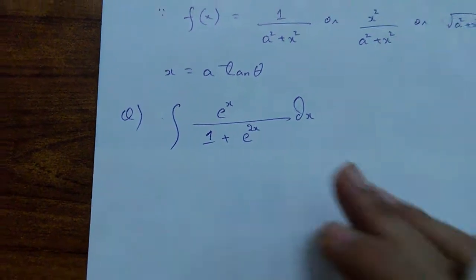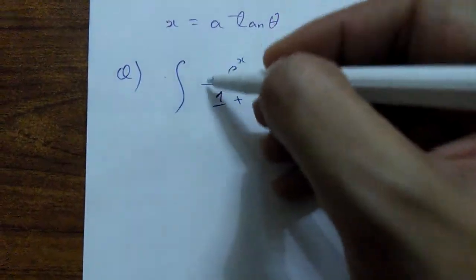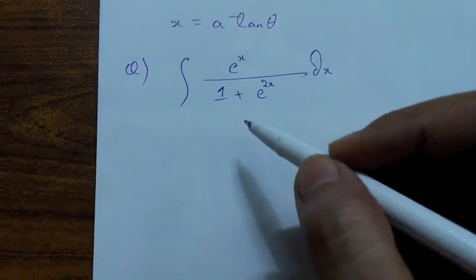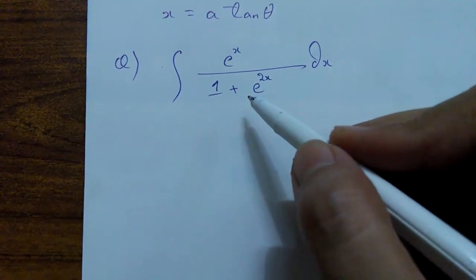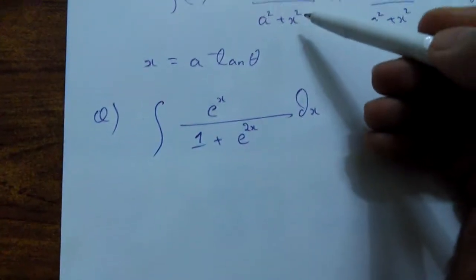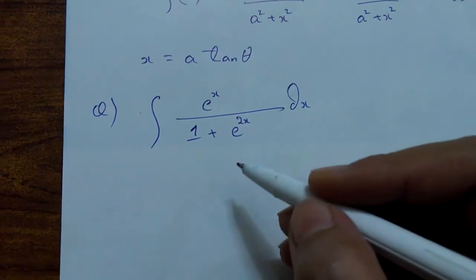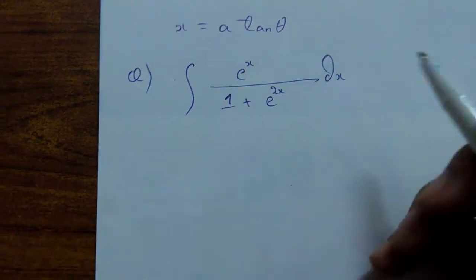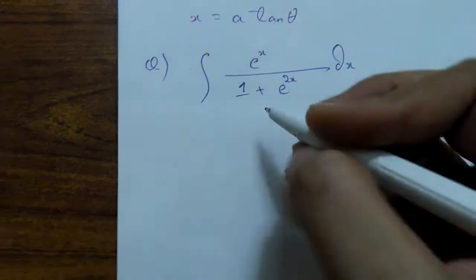This is the question — this is your integrand f of x. Now you might be thinking that there is no direct involvement of x squared here, so how are we going to handle this?